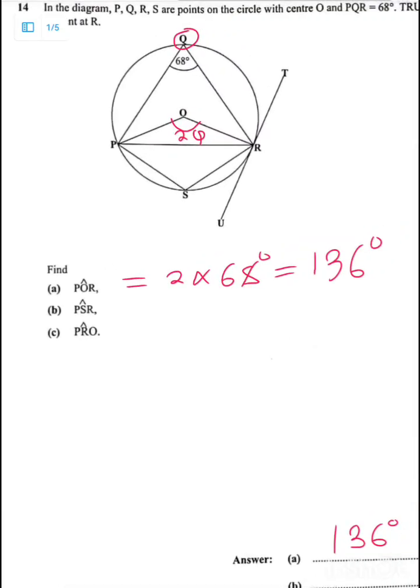Then let's go for B. So we found that this one is actually 136. We found that it is 136. So now let's go to B. B says PSR. P, S, R, this angle here.